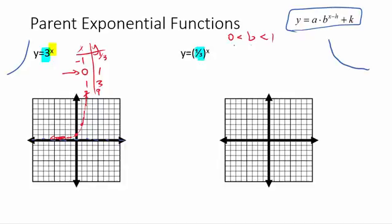Let's try the next one: y equals 1 third to the x. Again, I'm going to pick the same points — negative 1, 0, and 1. At x equals 0, that's my locator point, because it makes the exponent 0, and anything to the 0 power is 1. If you take 1 third to the negative 1, that just flips things over — the reciprocal — which makes that 3. And 1 third to the 1 stays as 1 third.